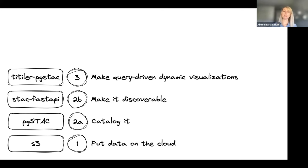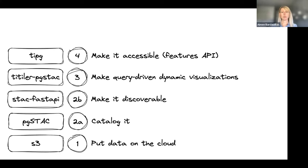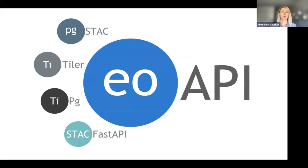We catalog it with PG STAC and put an API on top using the STAC FastAPI library to make it discoverable. We make it visualizable with a library called TiTiler PG STAC. More importantly, we make query-driven dynamic visualizations possible - you can visualize the underlying data without loading up all the files. You query the database with your temporal, spatial, and variable parameters, and that drives the tiles that are generated. You can make it accessible via the features API with a library called TiPg. This set of tools we're calling EO API: PG STAC, TiTiler, TiPg, and STAC FastAPI - these can be used together or individually.